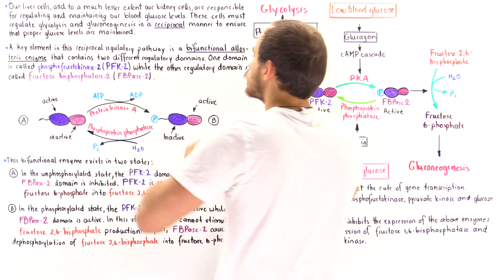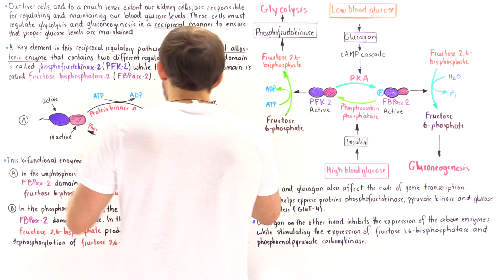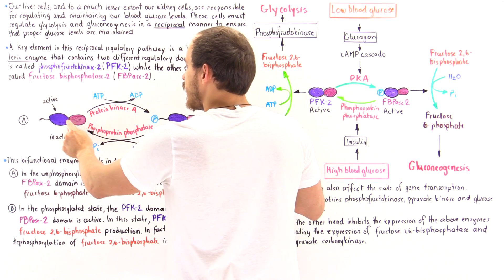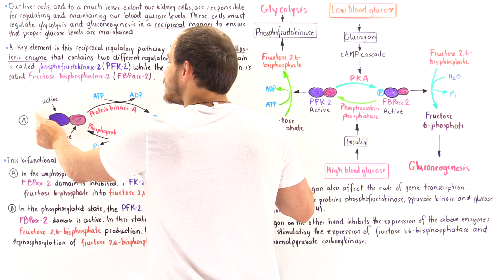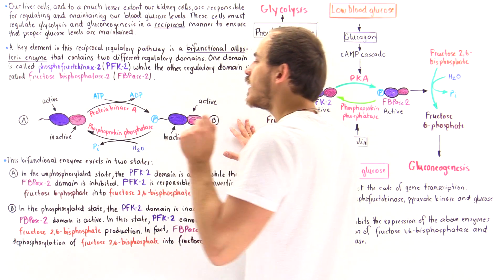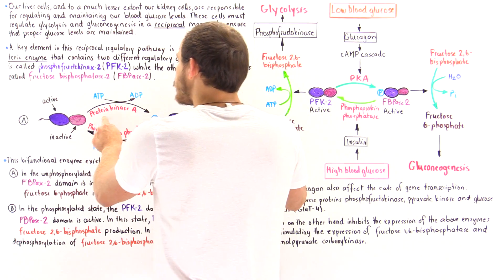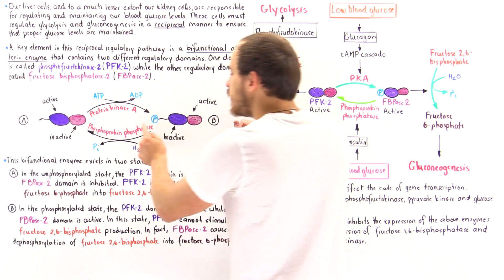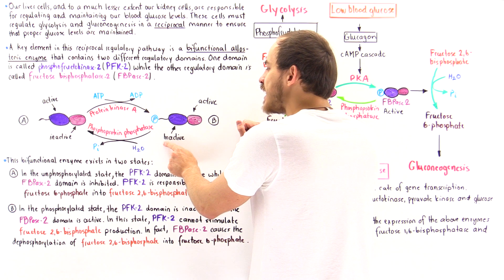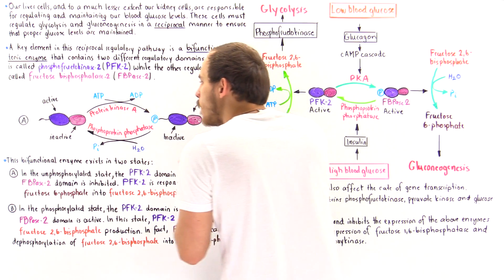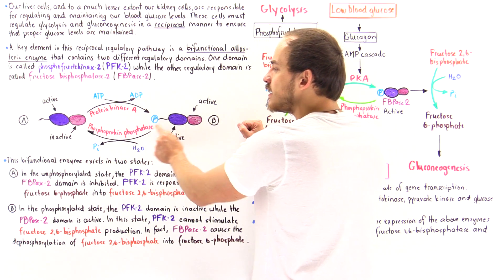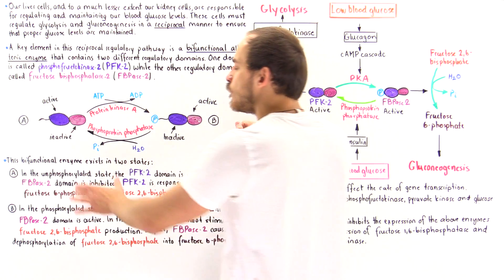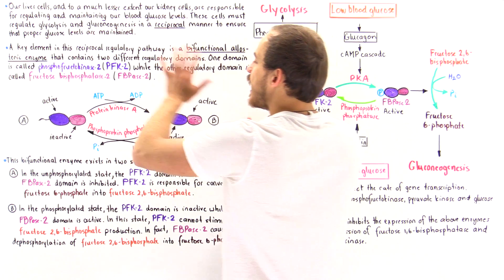This bifunctional enzyme can exist in two states: State A and State B. In State A, the PFK2 domain is active while FBPase2 is inactive, because the serine residue on this region is not phosphorylated. If protein kinase A takes an ATP and phosphorylates that serine residue, we create State B, where PFK2 becomes inactive while FBPase2 becomes active. We can return to State A via phosphoprotein phosphatase, which hydrolyzes that ester bond to remove the inorganic phosphate.